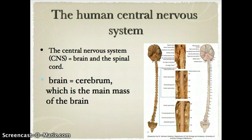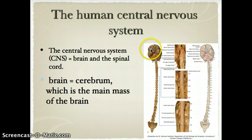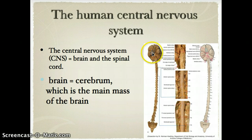The human central nervous system, the CNS, is composed of the brain and the spinal cord. You can see the spinal cord connected to the brain. The brain is also referred to as the cerebrum — this is just the mass of the brain. When you look at this mass of the brain, we call that the cerebrum.